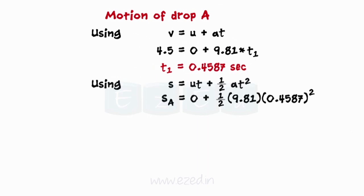Now, on substituting the value of T1 in equation for uniform acceleration motion, we get the vertical height SA.